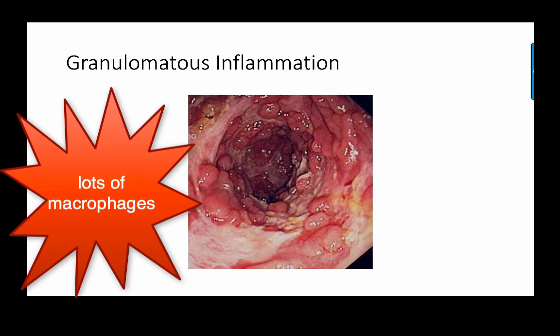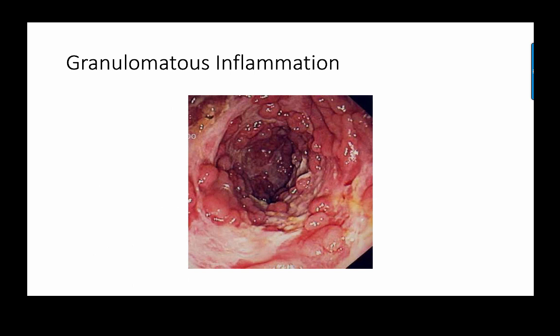When neutrophils have failed to clear the infection, macrophages arrive to kill remaining bacteria and deal with dead and decaying neutrophils. These get walled off and attached to the membrane, destroying surrounding tissue where they form. This process leads to caseous necrosis — what happens in the lungs in TB. This image shows the characteristic colon lining of Crohn's disease, where granulomatous inflammation results from the chronic immune response.